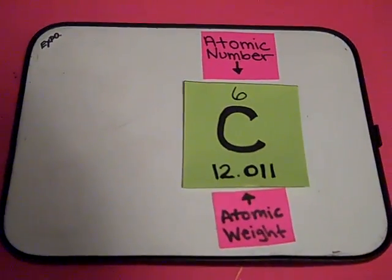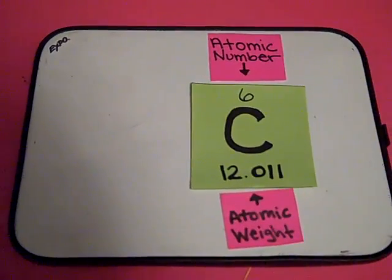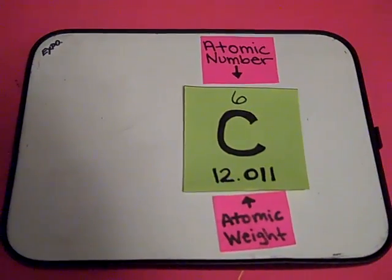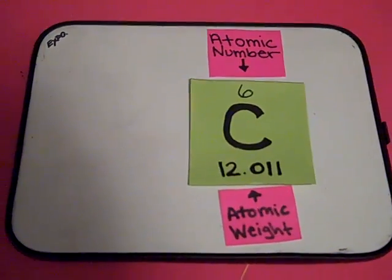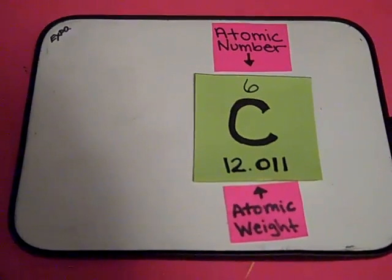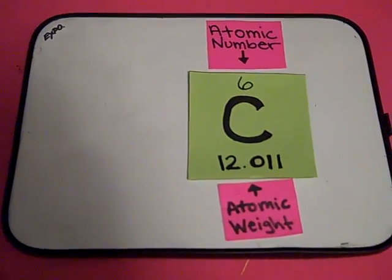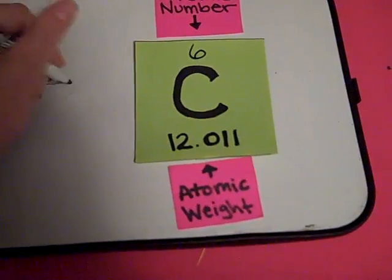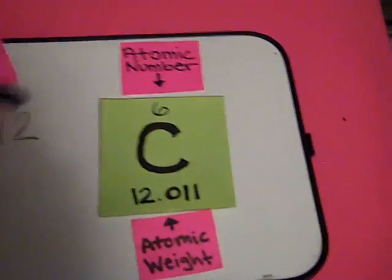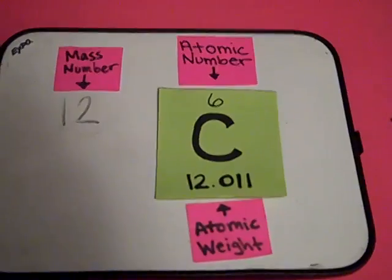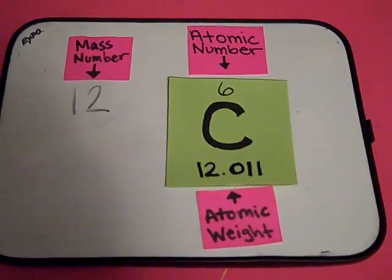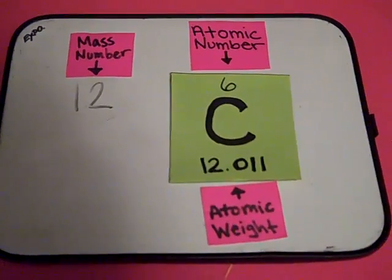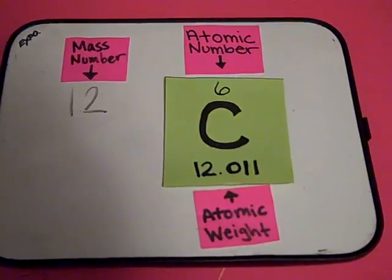The atomic weight is basically a measurement of the total number of particles in an atom's nucleus. An atom's nucleus is made up of protons and neutrons. In order to find the number of neutrons in an atom, you first need to round the atomic weight to the nearest whole number. In the case of carbon, that would be twelve. This number is called the mass number. Because we know the nucleus is made up of only protons and neutrons, we can subtract the number of protons from the mass number to find the number of neutrons.